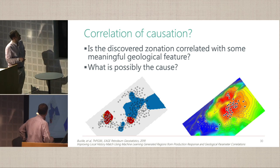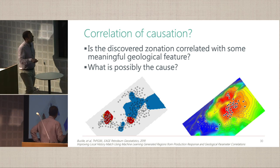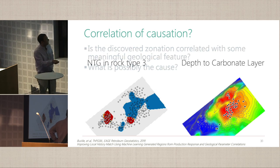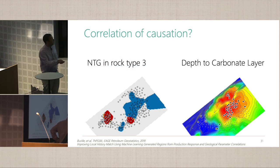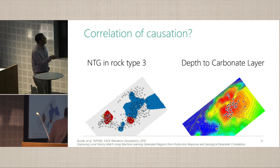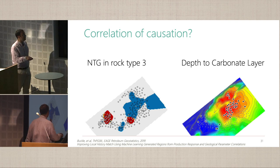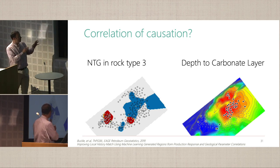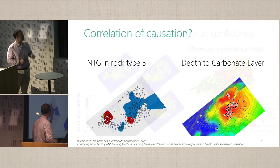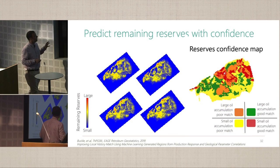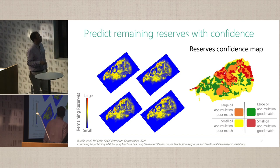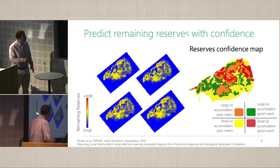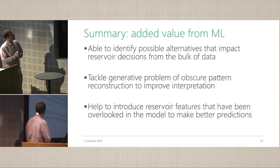We did this through classification of the link between static geological properties and dynamic response, identifying clusters of correlation and doing a simple mapping. When we looked at the classes, they coincided with a carbonate high. This is the depth of the carbonate layer, and the drastic high sits out. Rock type three — the NTG rock type — was caused by this thinning carbonate, which wasn't in the model in the first place. We picked it from the link between static and dynamic data, built an enhanced ensemble, and came up with a confidence map based on multiple history-matched models.